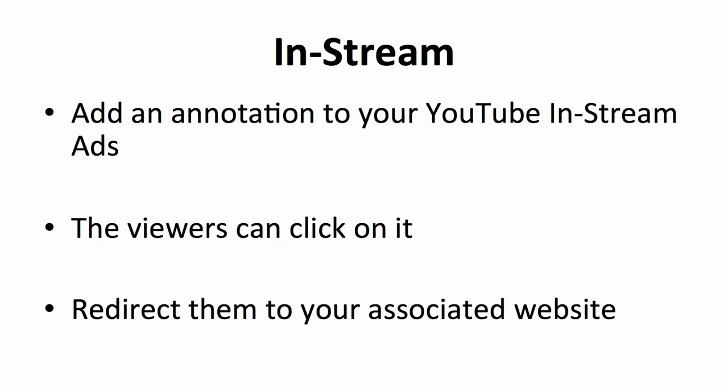The next method that allows you to build your list from your YouTube channel is by editing the annotation on your YouTube in-stream ads. You can tweak some links here to direct your viewers to your homepage or squeeze page. For the display URL, type in your homepage or associated website — this will create a link in your in-stream ad which viewers can click on. In the final or destination URL, insert the URL of your associated website or squeeze page, so when viewers click on the link, they will be directed to your associated website or squeeze page instead.